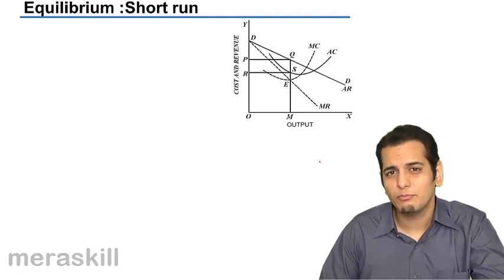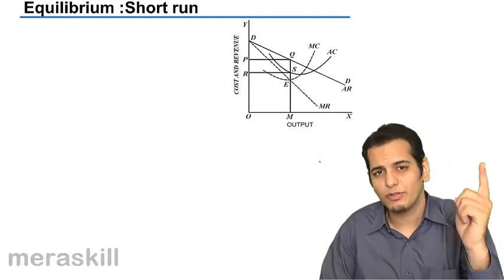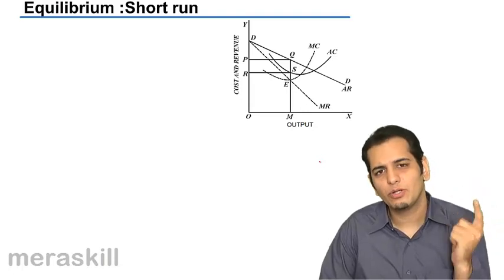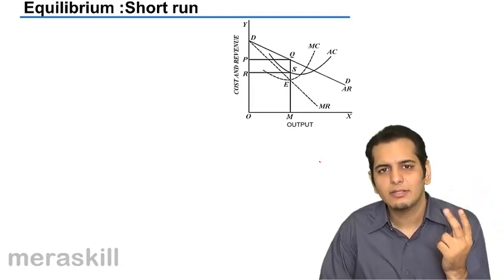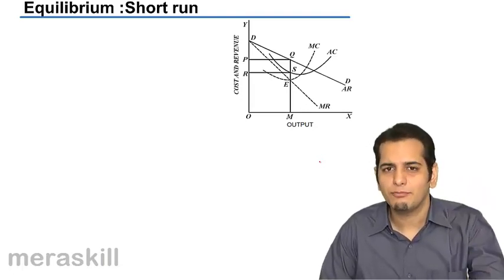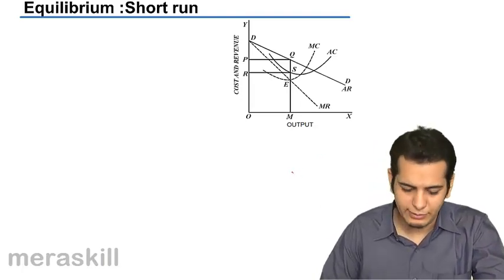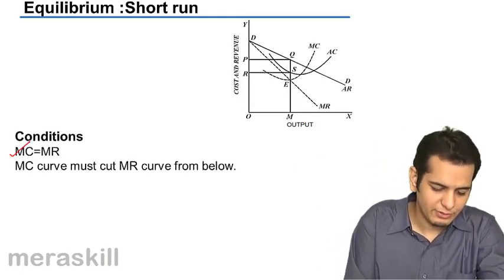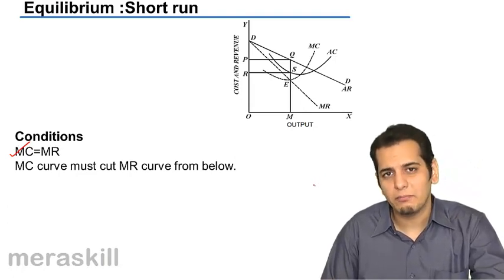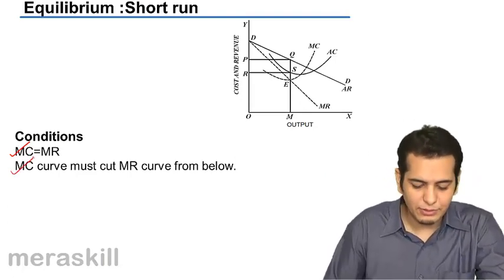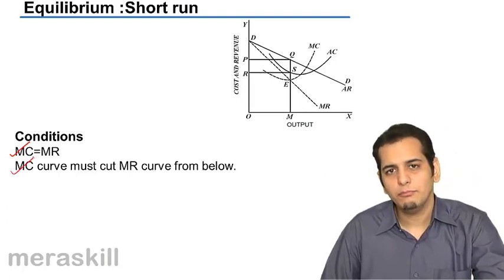So can you tell me what were the conditions? The conditions were first MC should be equal to MR, second MC should be cutting MR from below. Let's check. Yes, it's MC equal to MR and MC curve must cut MR curve from below.